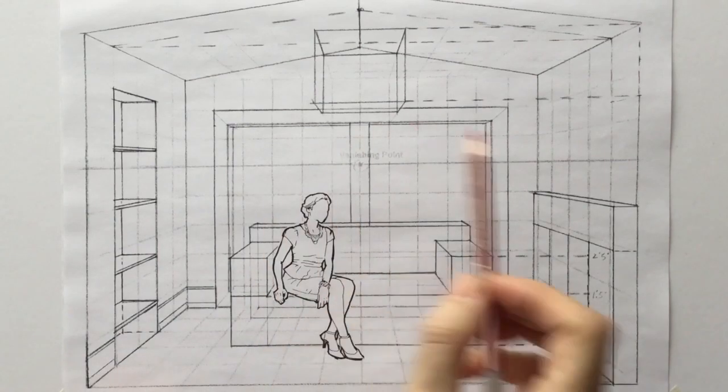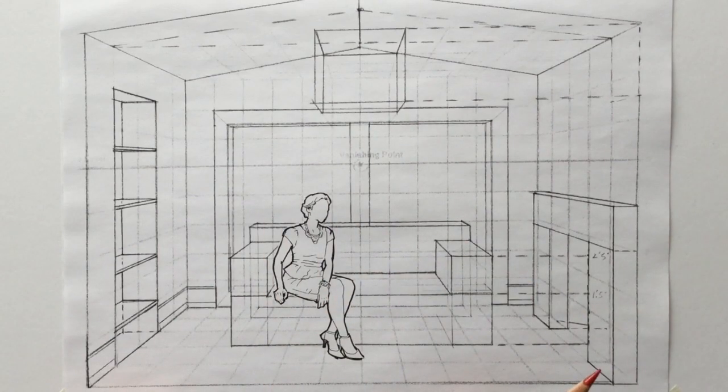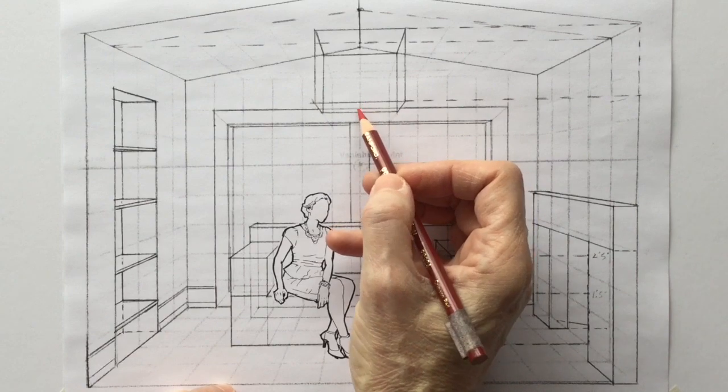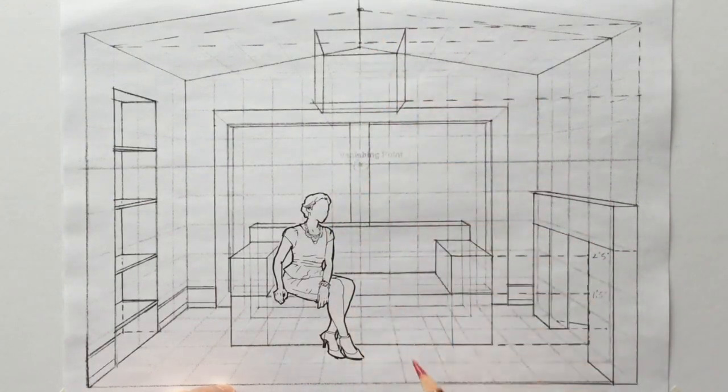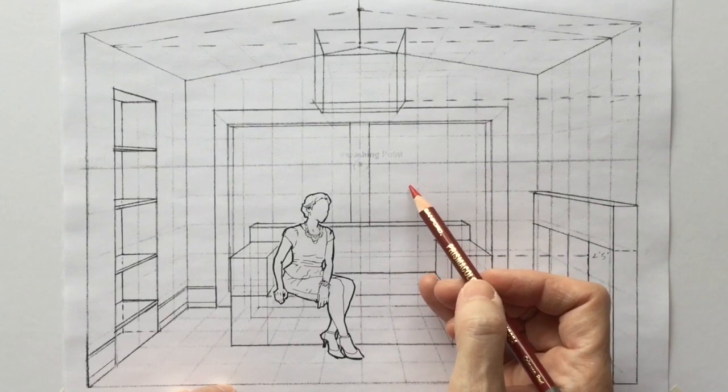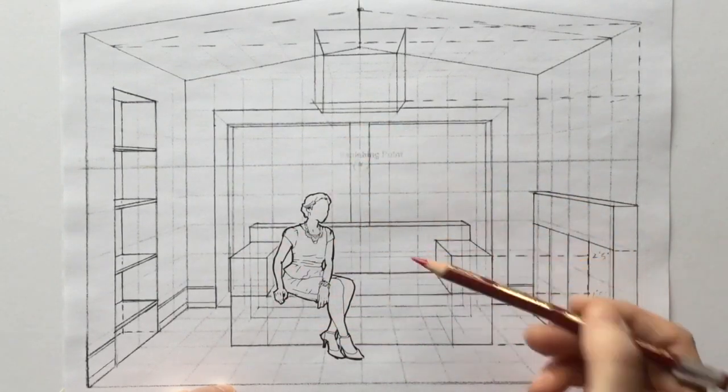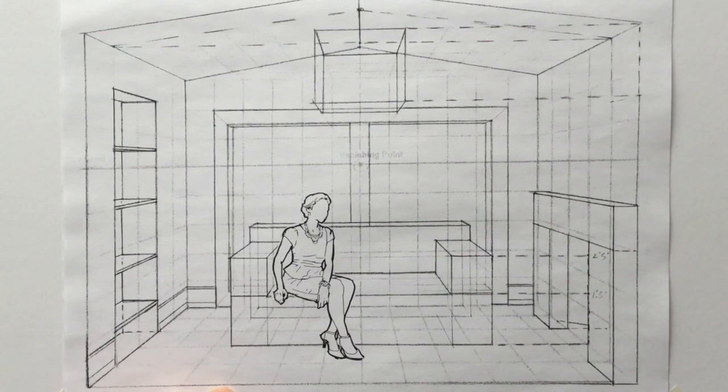We need to go back to our simple box form drawing in order to map out our shadows. Remember now our light source, our only light source, is this pendant light hanging from the ceiling. We're not going to use the window this time because if we did, most everything in the room would be backlit. We wouldn't be able to see the forms very well.